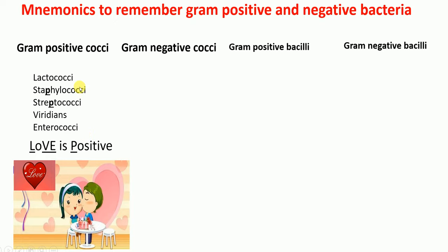So the mnemonic to remember gram-positive cocci is 'Love is Positive.' L for Lactococci, both Staphylococci and Streptococci for the letter P representing positive, V for Viridans, and E for Enterococci. Just remember: Love is Positive for gram-positive cocci.